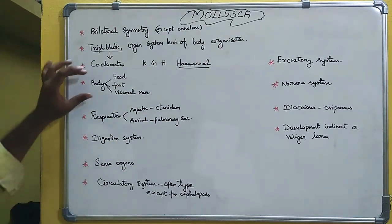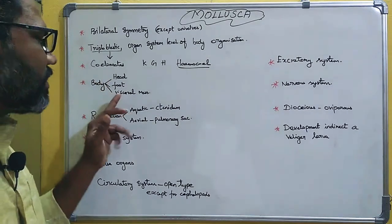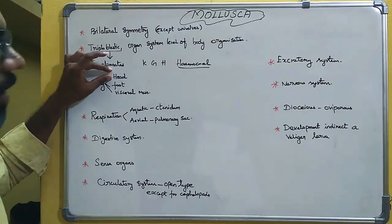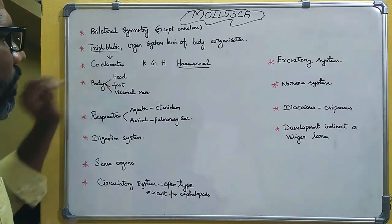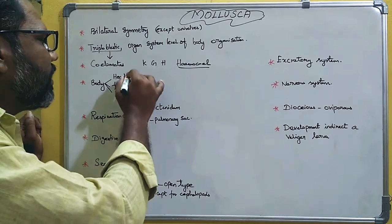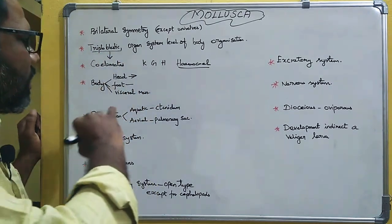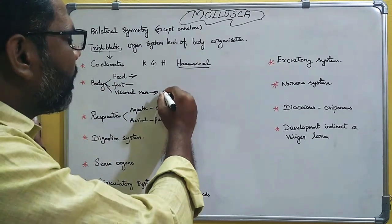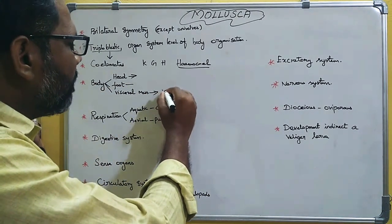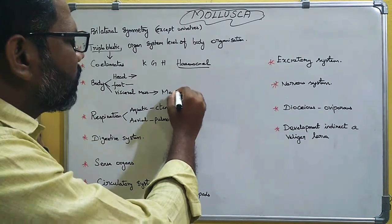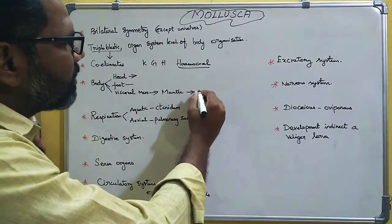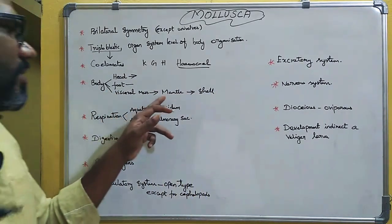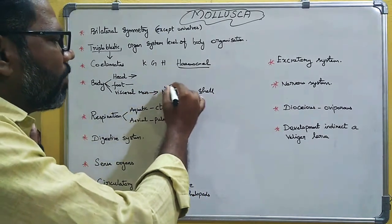The body is divided into head, foot, and visceral mass. The foot is very important for locomotion using muscles. The head bears sensory organs. The visceral mass is very important — it secretes the mantle, and the mantle secretes the shell.